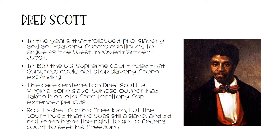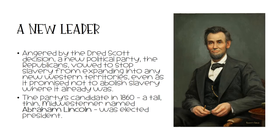The case centered on Dred Scott, a Virginia-born slave whose owner had taken him into free territory for extended periods of time. Scott asked for his freedom, but the court ruled that he was still a slave and did not even have the right to go to federal court to seek his freedom. Angered by the Dred Scott decision, a new political party, the Republicans, vowed to stop slavery from expanding into any new Western territories, even as it promised not to abolish slavery where it already was. The party's candidate in 1860, a tall Midwesterner named Abraham Lincoln, was elected president.